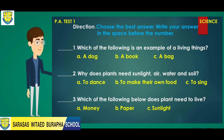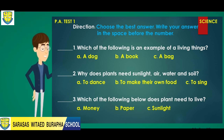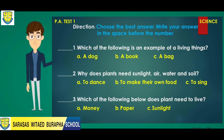Number two: Why do plants need sunlight, air, water, and soil? A. To dance. B. To make their own food. Or C. To sing.